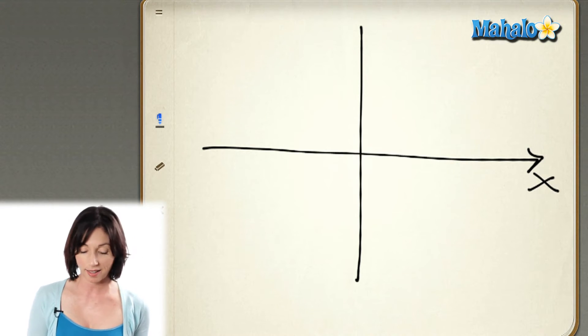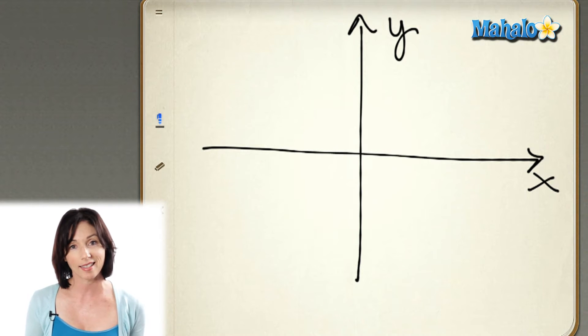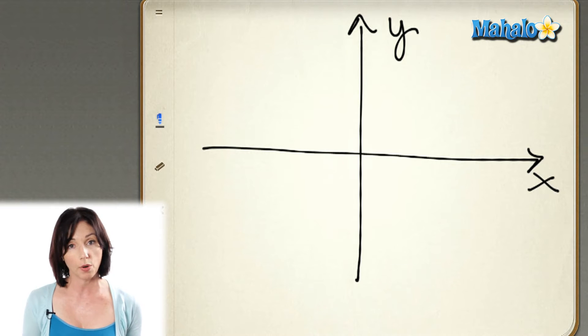The horizontal axis is the x-axis, and the vertical axis is the y-axis. And they meet at a point called the origin.